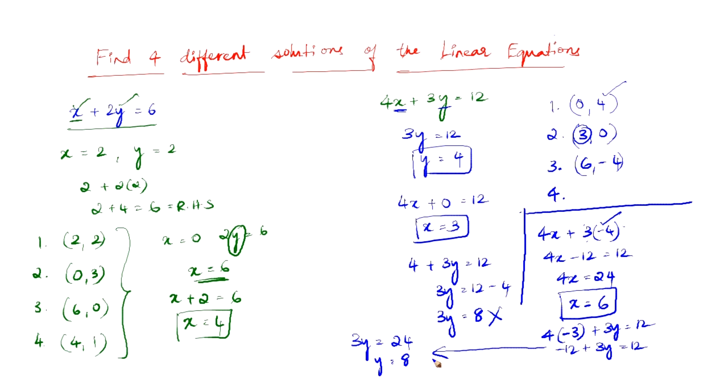Therefore 12 plus 12 is 24 and yes, we have y equals 8. So finally, we got a value for y when x is minus 3. So we can write minus 3 comma 8 as another solution. So this is few of the infinite number of solutions for the linear equation 4x plus 3y equals 12.